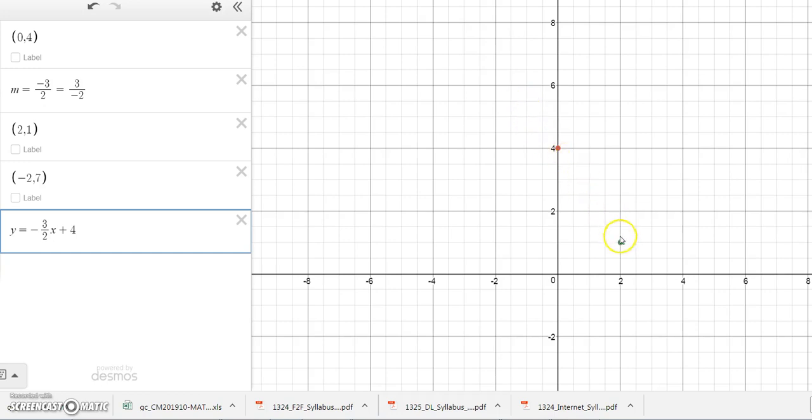Now really I could go ahead and just draw the line through those two points, but let's go ahead and find another point. I could go down another 3 units and run 2 units, but let's say you read the slope as 3 over -2 instead of -3 over 2.